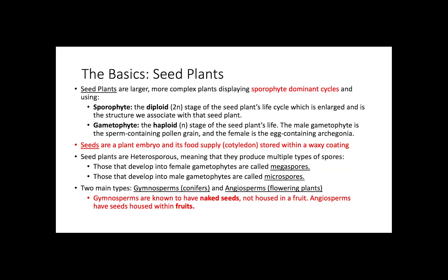Seed plants are larger, more complex plants displaying sporophyte-dominant cycles. The sporophyte is the dominant stage of the seed plant's life cycle — it is enlarged and is the structure we associate with that seed plant. The gametophyte is the haploid stage. The male gametophyte is the sperm-containing pollen grain, and the female is the egg-containing archegonia.